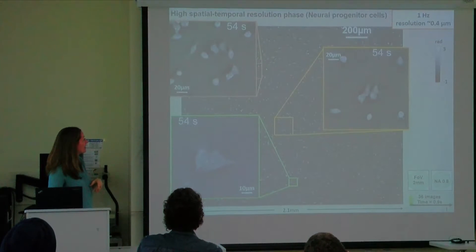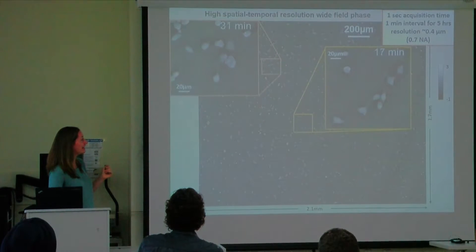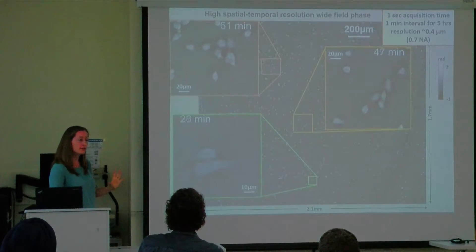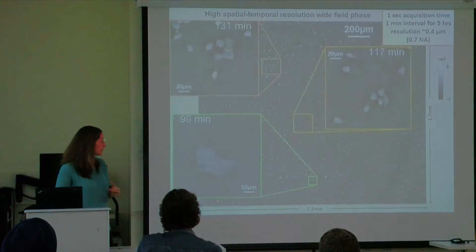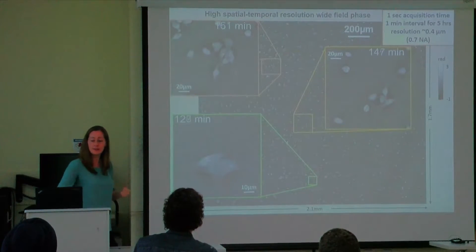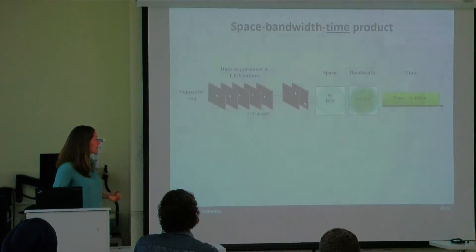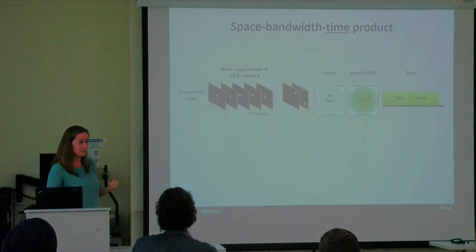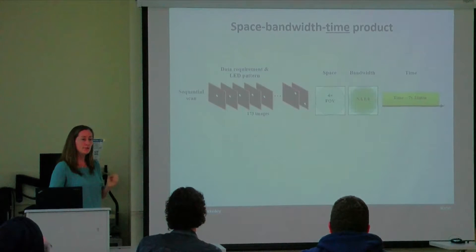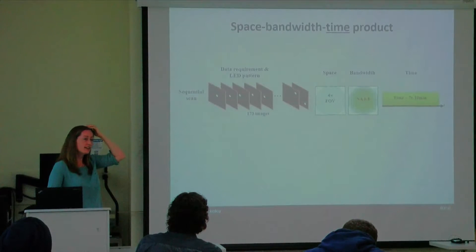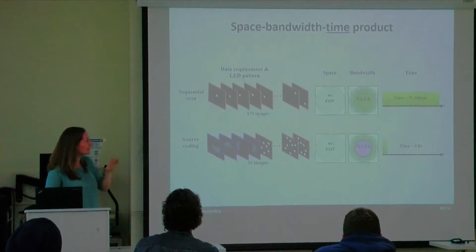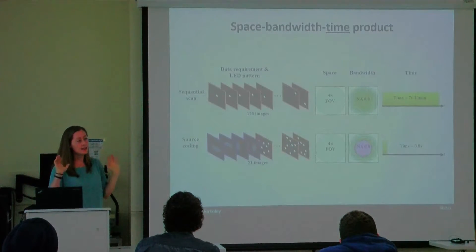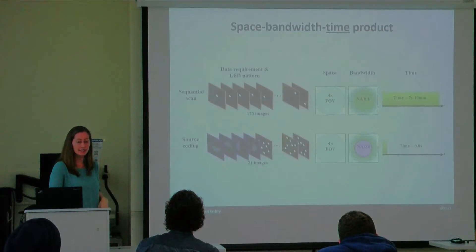I call this the space-bandwidth-time product. Space-bandwidth product is really about the number of pixels — what manufacturers call resolution on cameras, monitors, and projectors. Now we can achieve a very good time resolution for the same space-bandwidth product: high resolution, large field of view, and fast acquisition times simultaneously.